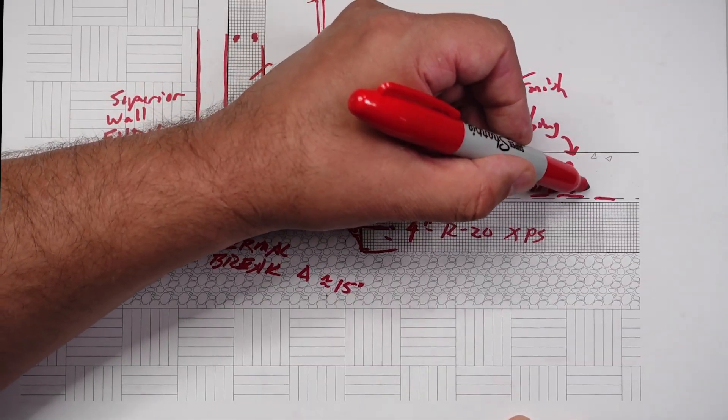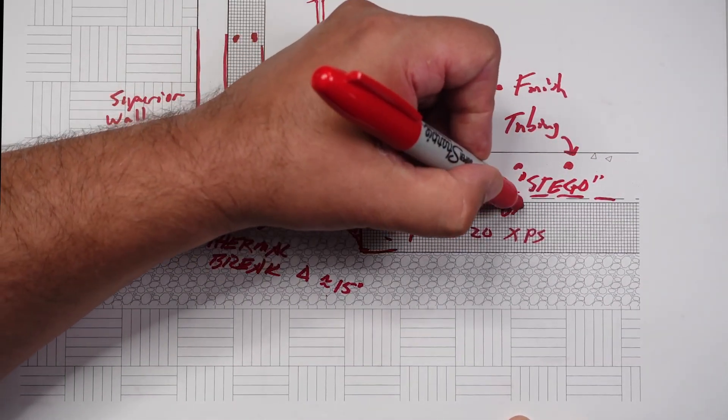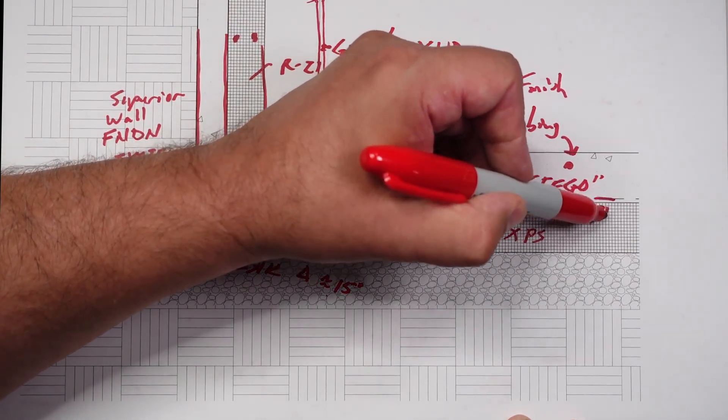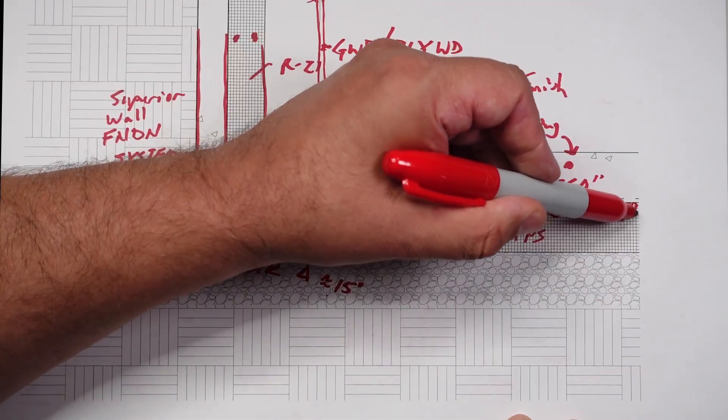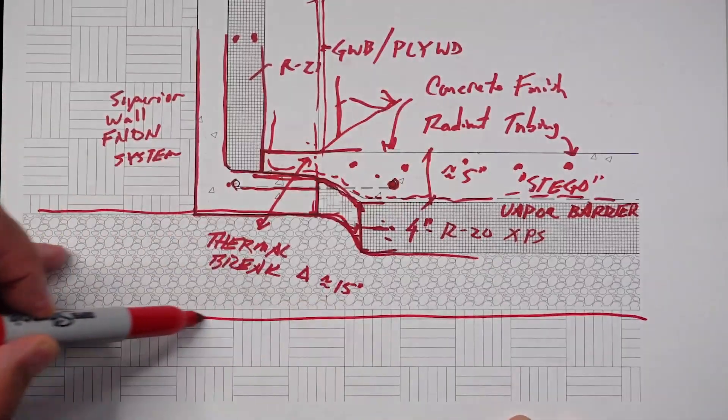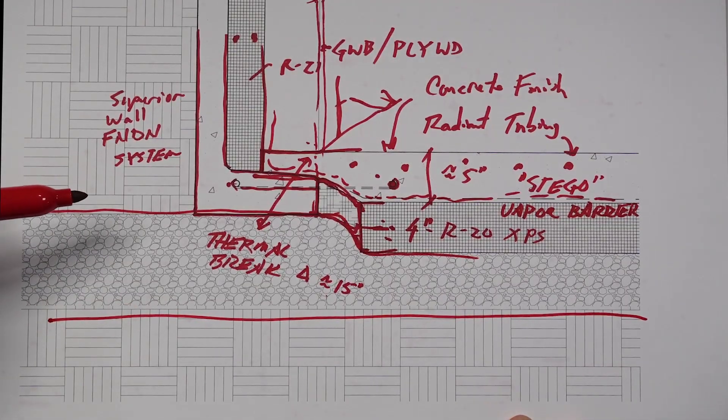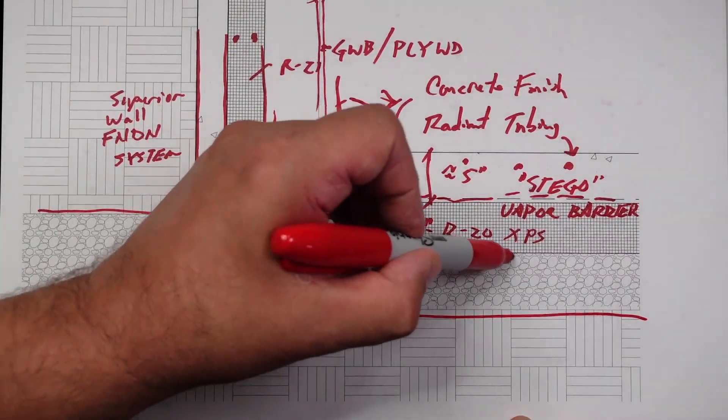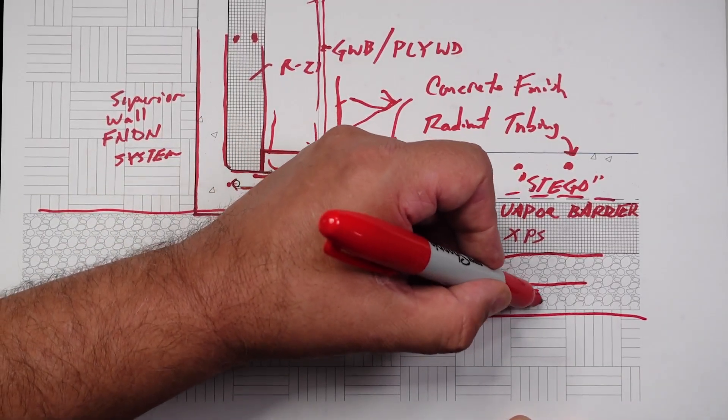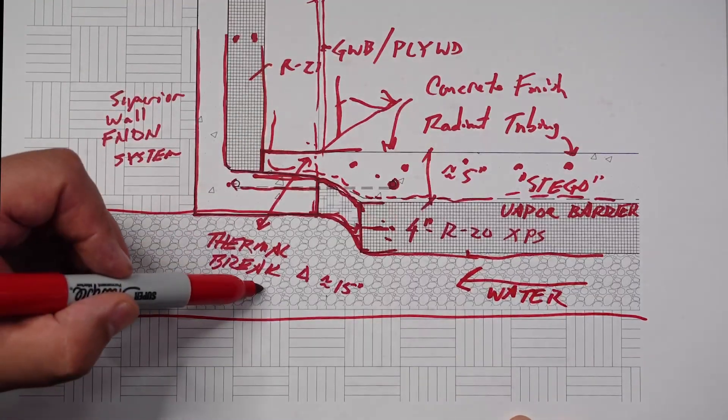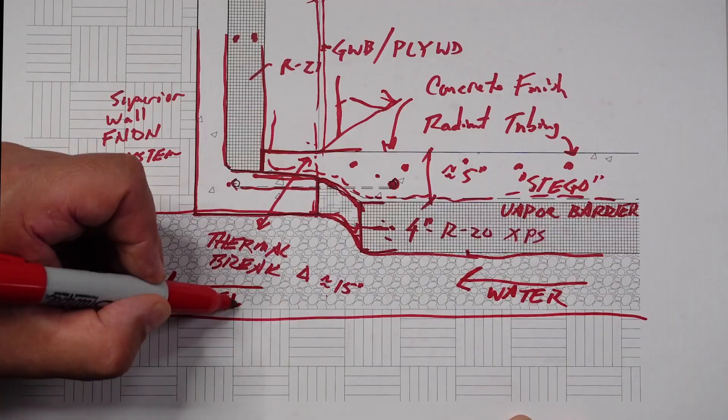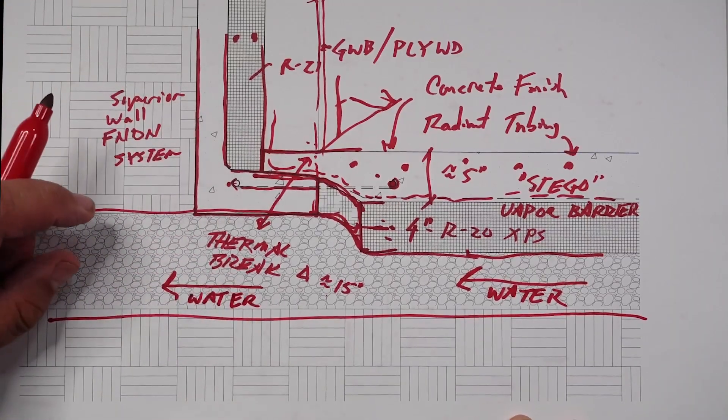Our Stego is our vapor barrier, which I'm not too worried about given that the whole house, you can see, is on a stone bed. If you saw from the earlier videos, I've actually made mention where the house was designed for water to migrate under, right? We have a literal path of water migration under the building because of where it's located.